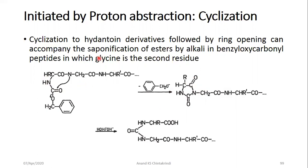The glycine residue is highlighted in every cyclization because of the absence of any bulky side chain — it has only a hydrogen. This non-bulky nature specifically facilitates ring formation. If any substitution were present, there would be steric hindrance in the ring formation.